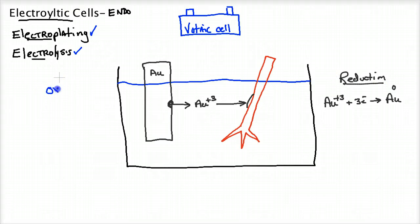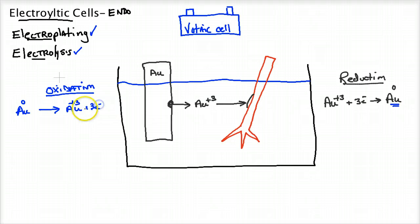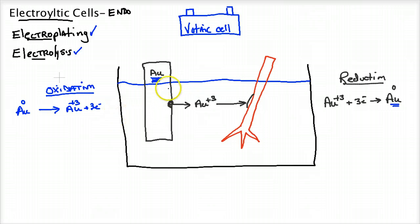My oxidation — because in a redox reaction I have to have both — in order to have some plating going on, making solid gold, I need my gold, Au⁰ solid, to oxidize into Au³⁺ plus 3 electrons. It's got to give off 3 electrons. It's got to be forced to do so, because as you remember from your activity tables, gold resists oxidation — so much so that you need to add energy to force it to happen.